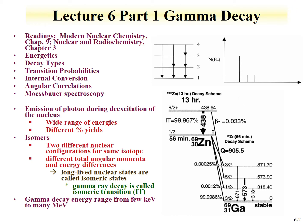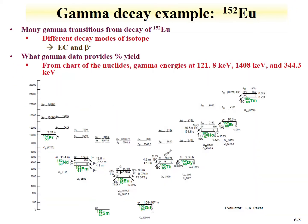Gamma decay energies range from a few keV to many MeV. One of the things we're interested in evaluating is what percentage of the time a gamma occurs. We'll go over this with an example using europium-152, where gamma decay can be used to determine the concentration or activity of an isotope, and you must know what percentage of the time this gamma occurs with the decay.